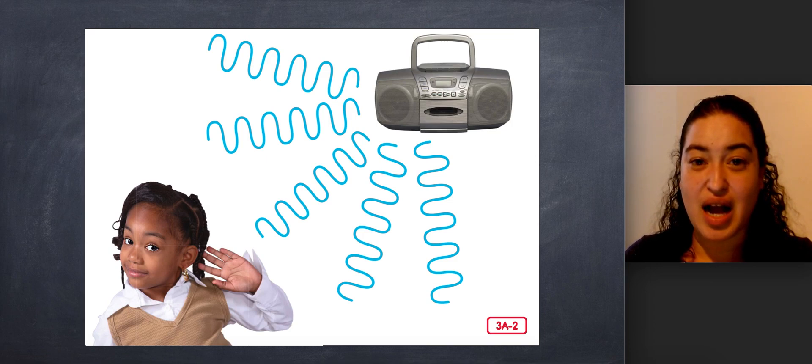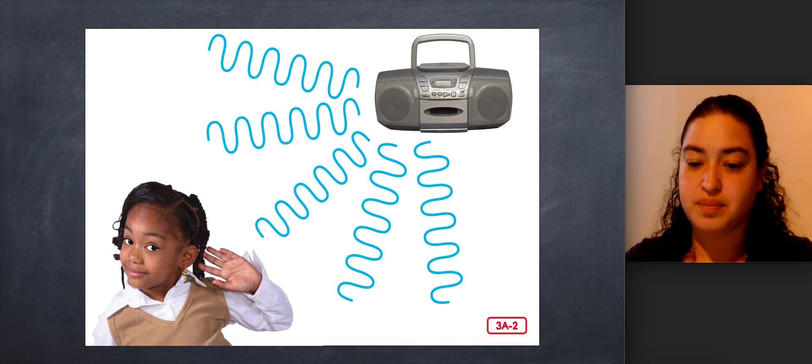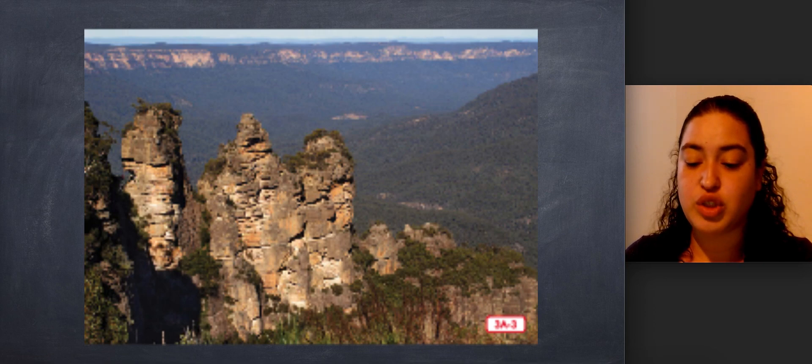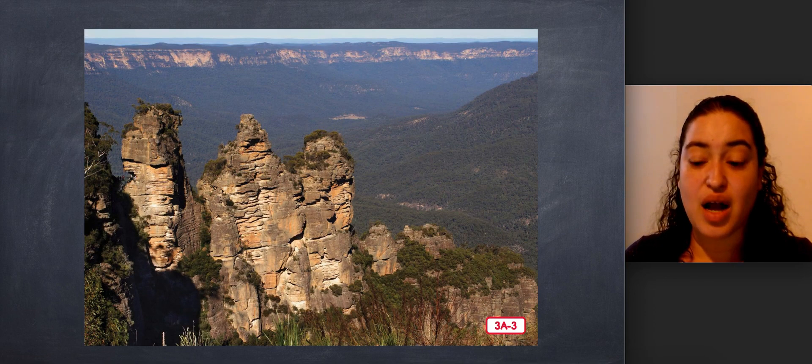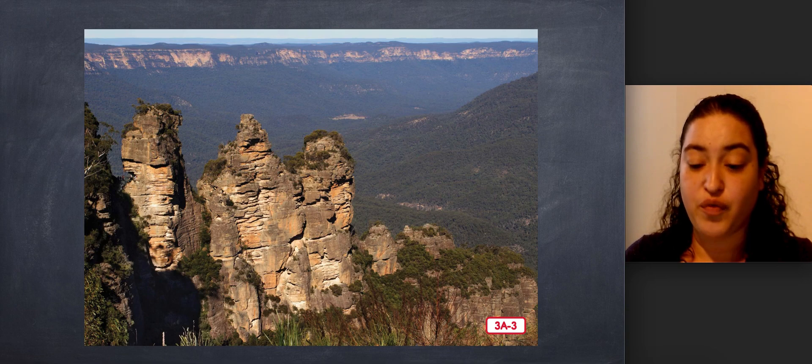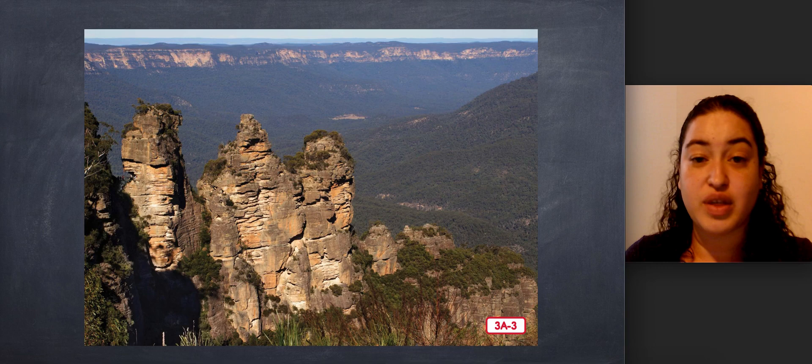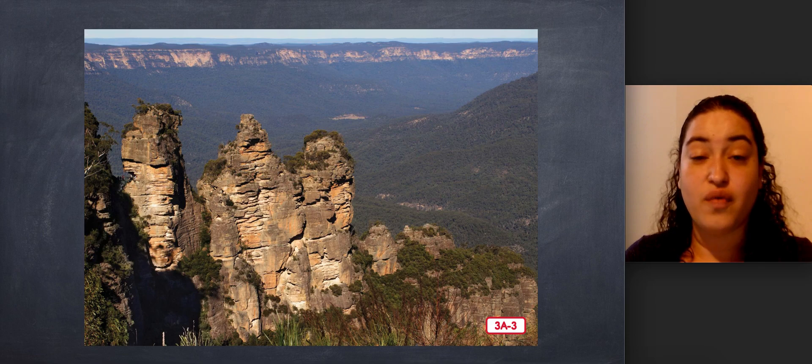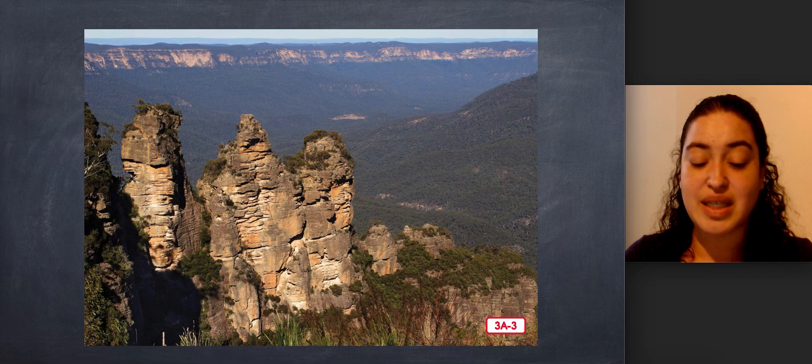Have you ever heard an echo? An echo is a sound that you hear again when sound waves bounce back off something. This photo shows a place called Echo Point in the Blue Mountains of Australia. With a good loud shout from this cliff, the sound waves from your voice travel out and bounce off the surrounding cliffs. A second or two later, you hear your voice echo very clearly, almost as if someone else were standing on the opposite cliff and copying everything you said.